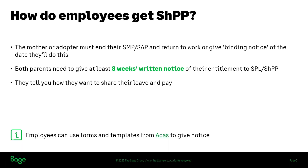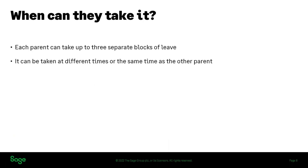When can an employee take their shared parental leave and, where applicable, receive shared parental pay? They can take up to three separate blocks of leave under the legislation, so they don't have to take it as a continuous block as they would for SMP or SAP. The leave can be taken at different times or at the same time as the other parent — it's down to them to decide, and they can both be off at the same time, but there's only the remaining number of weeks to share between them.